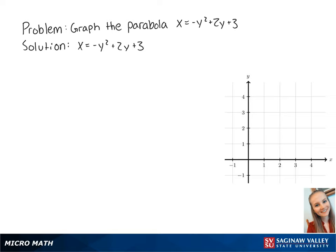For this problem, we want to graph the parabola of the equation x equals negative y squared plus 2y plus 3. First, we want to find the coordinates of the vertex.